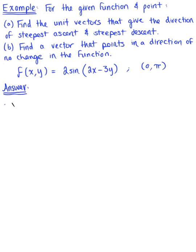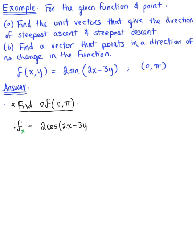The first thing we need to do is find the gradient at this given point. To find the gradient, we need the partial derivatives. For the partial derivative with respect to x, we treat y like a constant. This gives us 2 multiplied by cosine of 2x minus 3y, multiplied by the derivative of the argument with respect to x, which is 2. We can rewrite this as 4 cosine of 2x minus 3y.